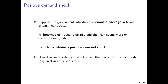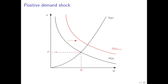Now suppose there is a positive demand shock that we conceptualize here as a governmental stimulus package in terms of cash handouts. For example, during the COVID-19 pandemic, governments gave cash handouts to households in the hope that households would spend these handouts and thereby support the economy. These cash handouts raise the incomes of households, and we have seen that an income change shifts the demand curve. So this constitutes a positive demand shock. We use the market diagram to analyze how such a demand shock affects the market for normal goods, say restaurant visits after the pandemic ends.